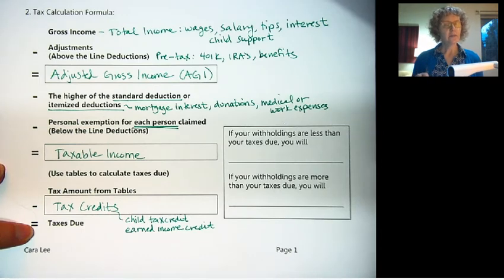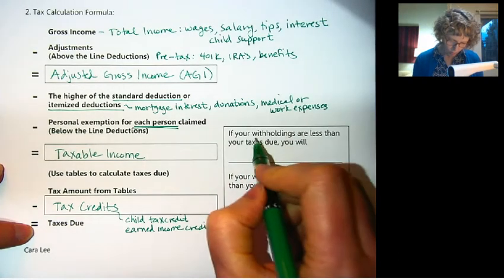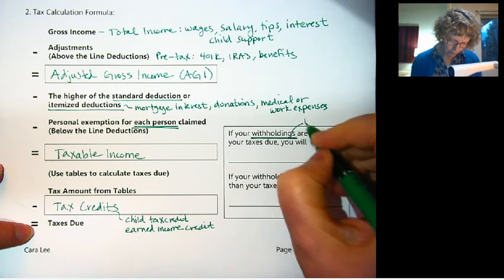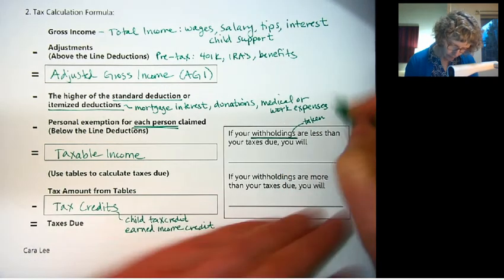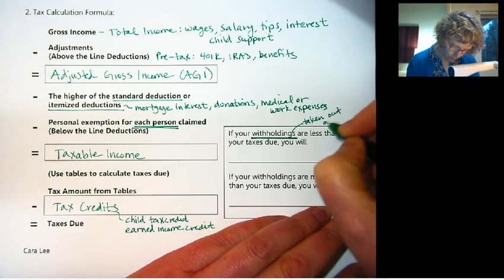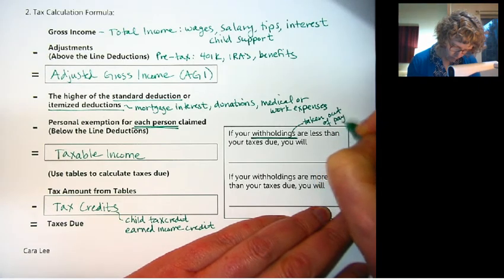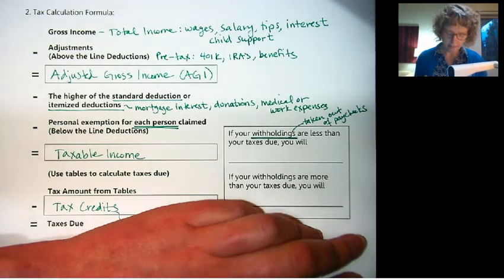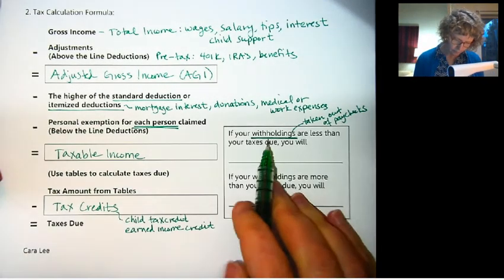Now, if you've been getting paychecks all throughout the year, your employer has been subtracting some money out for taxes. And that's really important so you don't have this huge tax bill at the end of the year. So those are called withholdings. Withholdings is taken out of your paycheck. If you have your own business, you might be making quarterly payments.